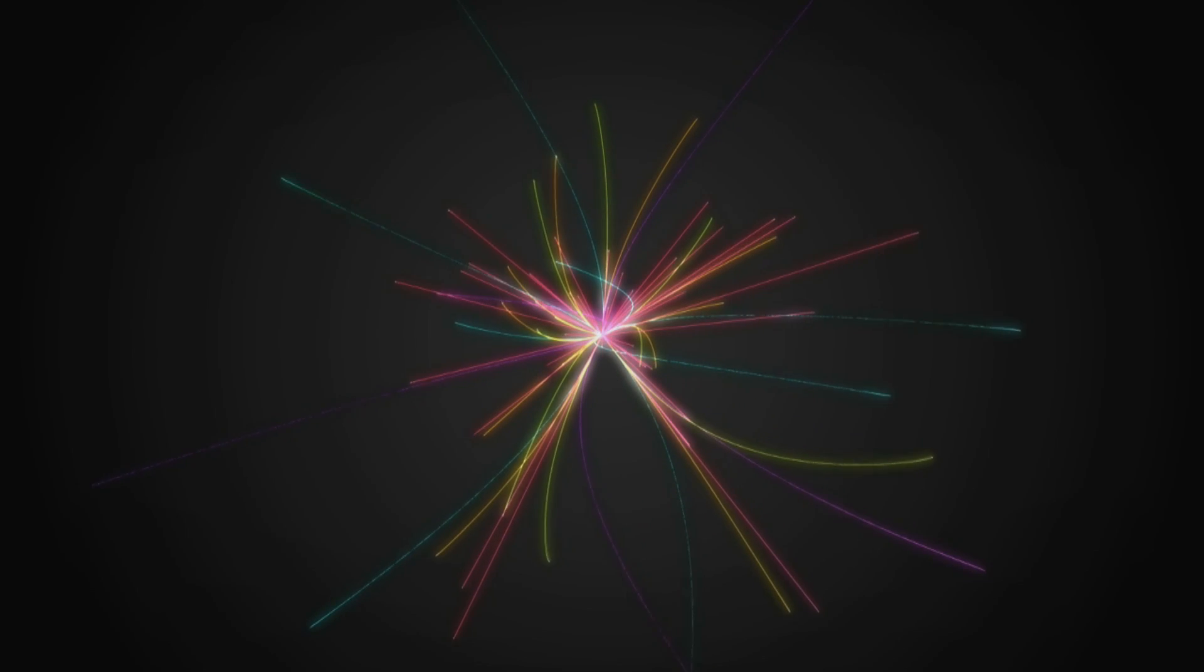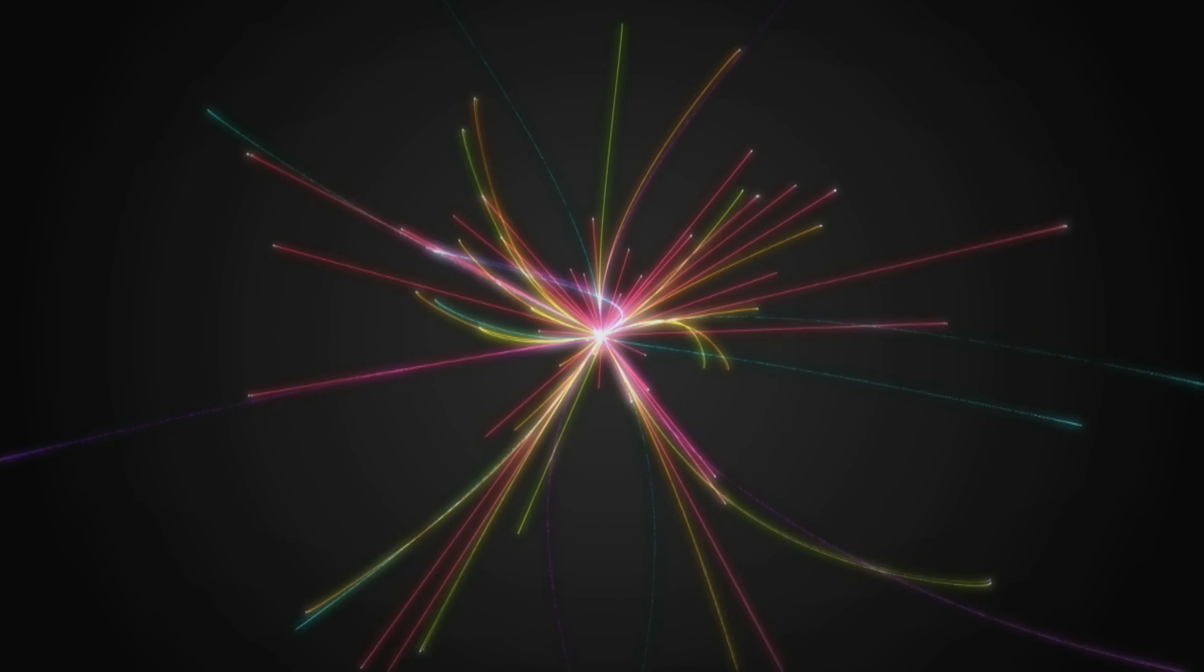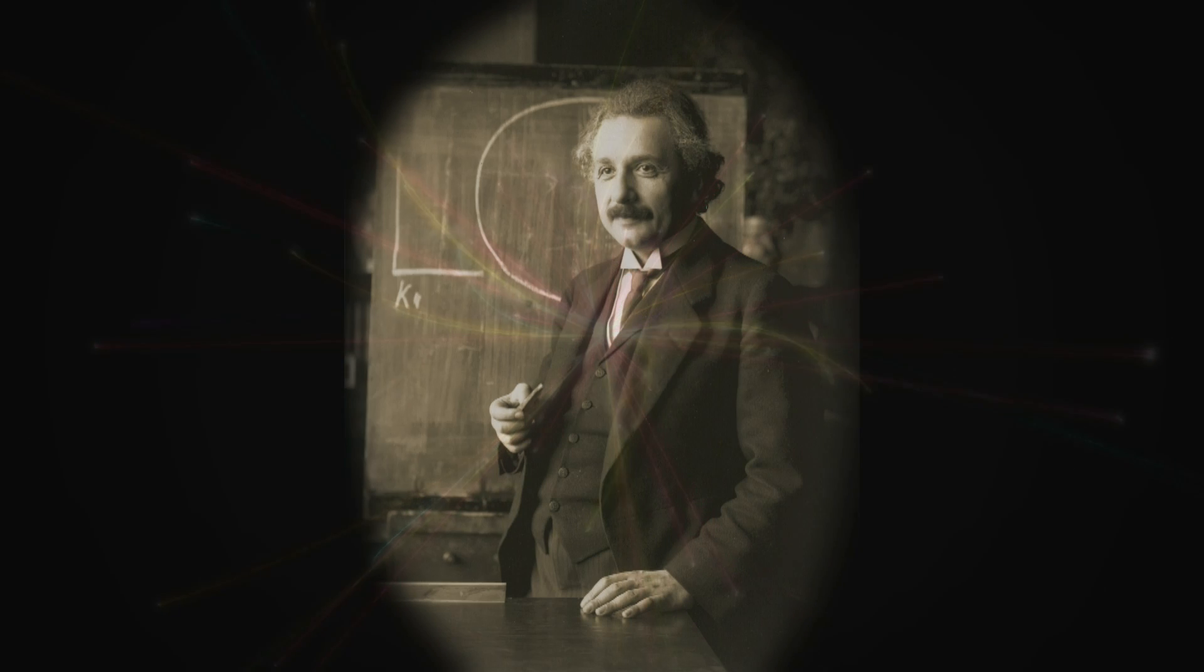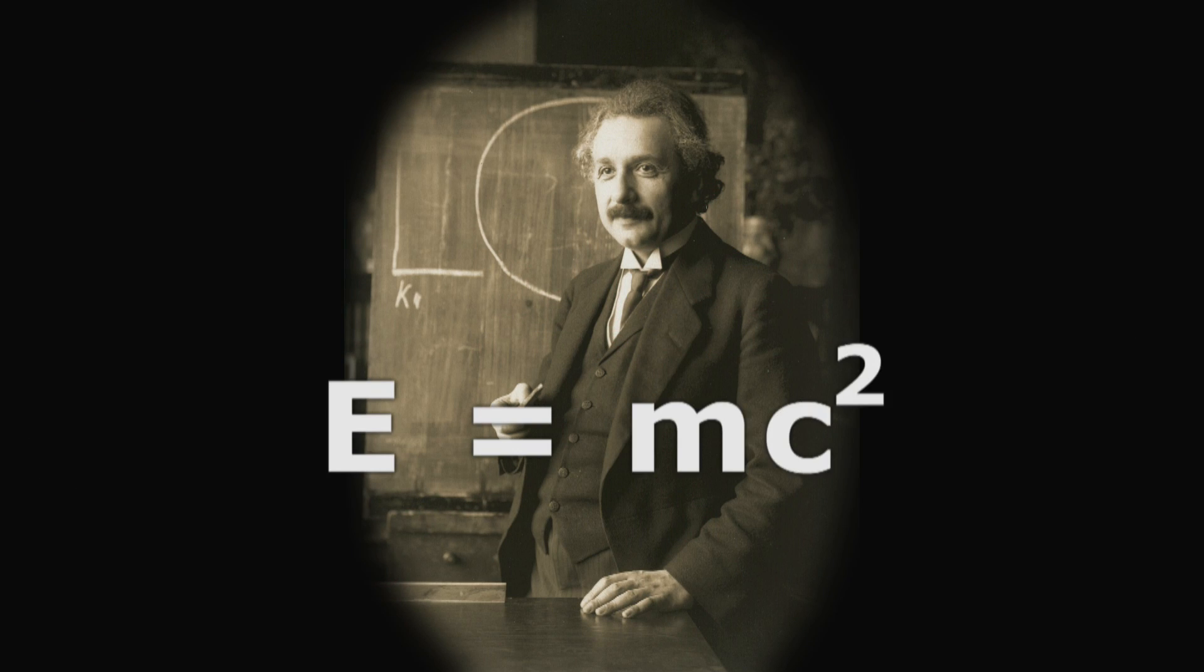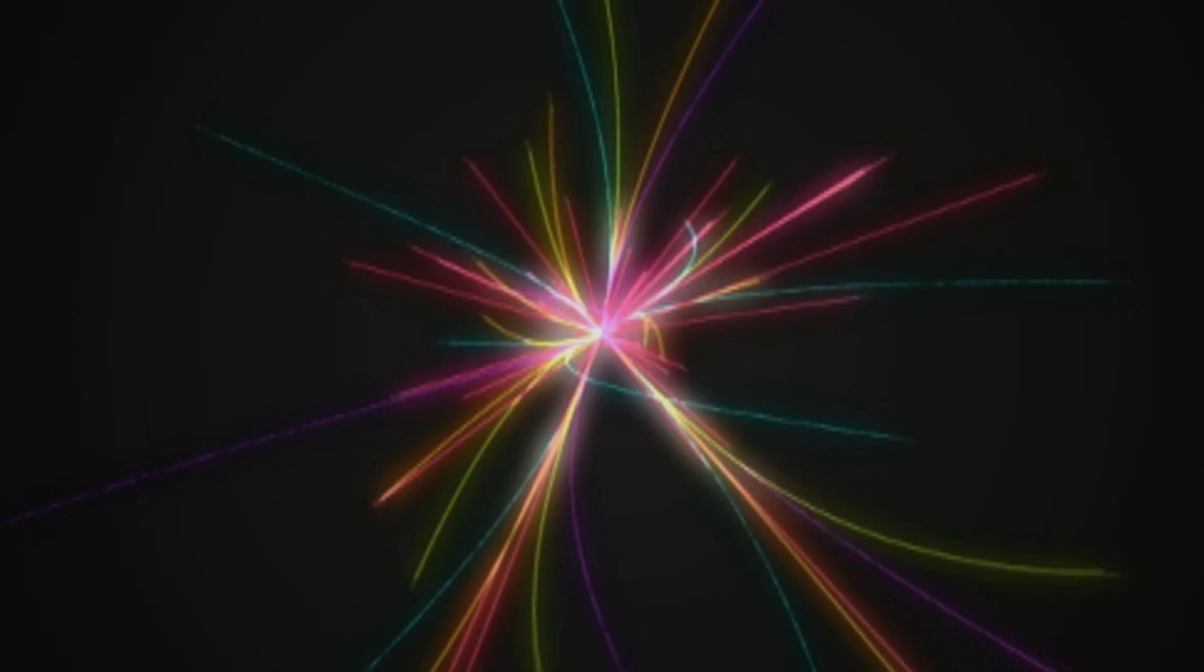This energy was then available to create new subatomic particles. As Albert Einstein outlined in his famous equation, mass can transform into energy, and energy can transform into mass. If you smash particles against each other, the resulting energy will transform into mass, that is, particles.